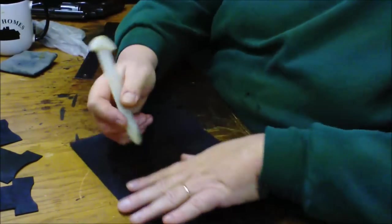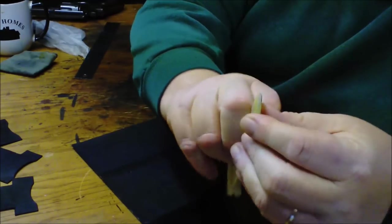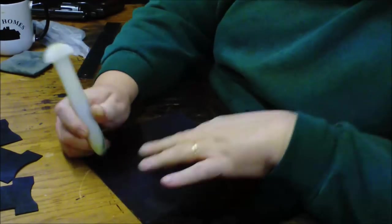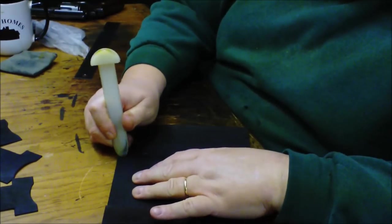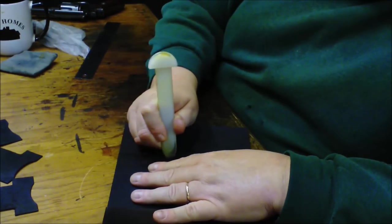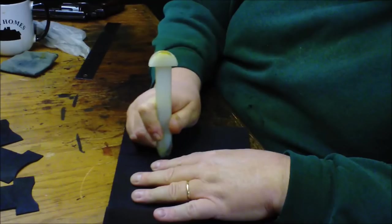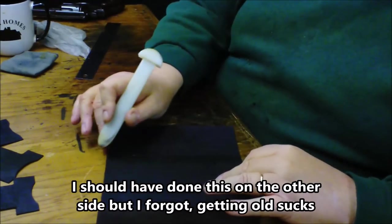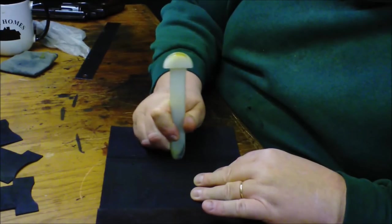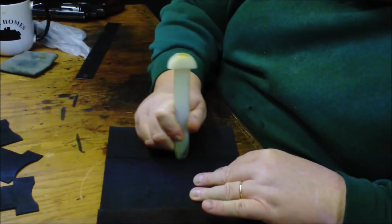I'm going to take the edge of this, which is pretty good for creasing. And I'm just going to kind of, on this one, because since this is going to be the end of it, I'm going to crease it. Now if it was heavier leather, I'd take a groover, like a stitch grooving tool, and I would put a groove in it to make it easier to fold.